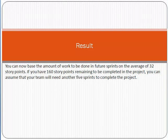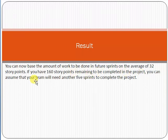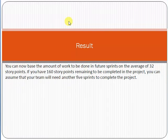What is the advantage of calculating sprint velocity? You can now base the amount of work to be done in future sprints on the average of 32 story points. If you have 160 story points remaining to be completed in the project, you can assume that your team will need another five sprints to complete the project. That is the main concept of sprint velocity.